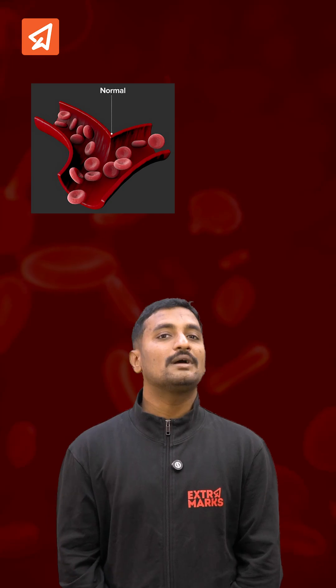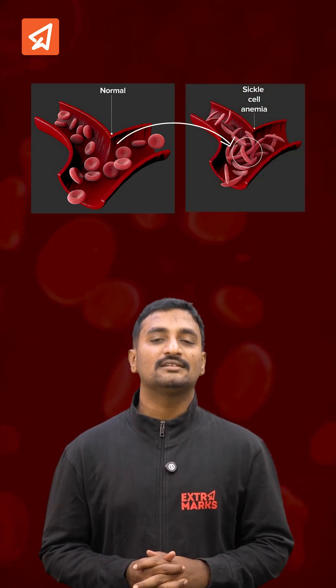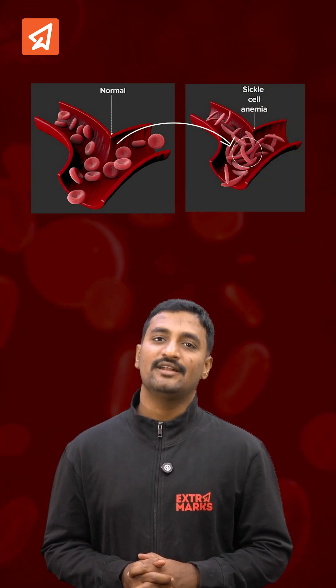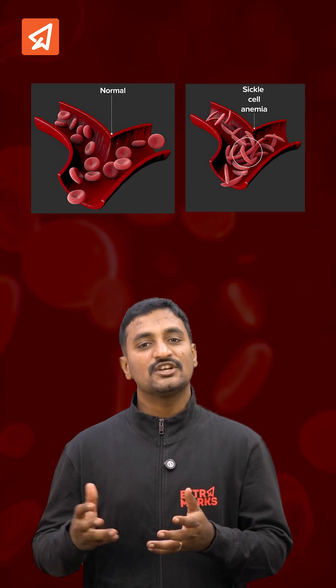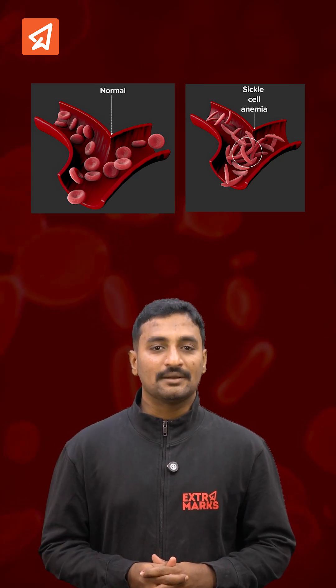Due to this, the abnormal hemoglobin molecules tend to clump together under low oxygen conditions, which leads to the sickle-shaped RBCs.